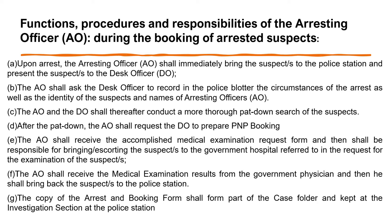Functions, procedures, and responsibilities of the arresting officer during the booking of arrested suspects: upon arrest, the arresting officer shall immediately bring the suspect to the police station and present the suspect to the desk officer. The arresting officer shall ask the desk officer to record in the police blotter the circumstances of the arrest, as well as the identity of the suspects and names of arresting officers. This will be the basis for assigning a blotter number to the arrest, which signifies that the police station has officially taken cognizance of the arrest.